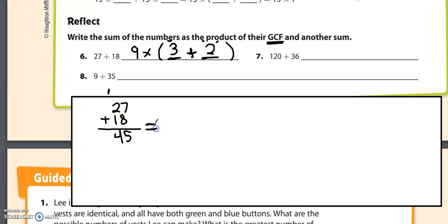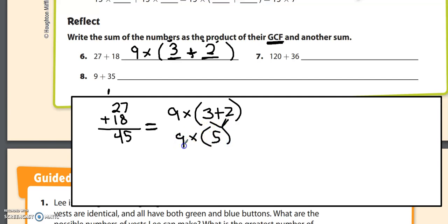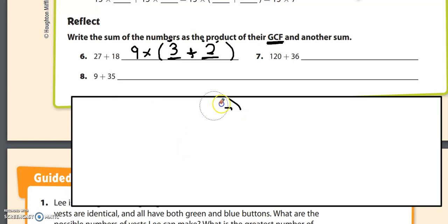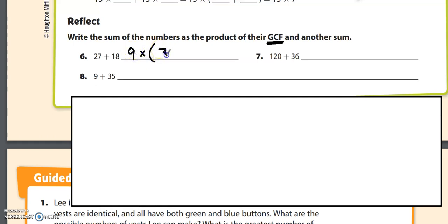That should be equal to this: 9 times open parenthesis 3 plus 2. The order of operations says we do what's inside the parentheses first — 3 plus 2 is 5 — and 5 times 9 is 45. Therefore, we got it right. So the clean answer is 9 times open parenthesis 3 plus 2.